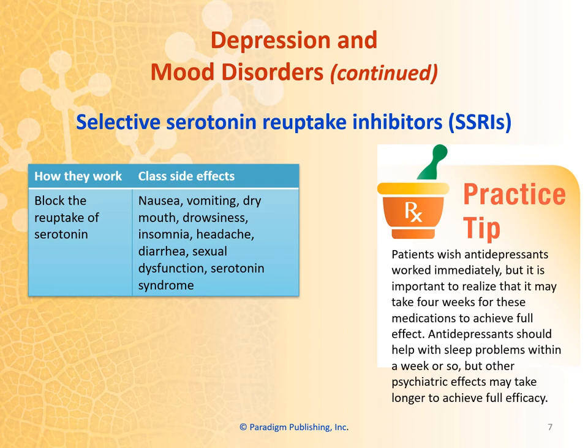There are different types of antidepressants. The first class we're going to talk about is selective serotonin reuptake inhibitors, or SSRIs. The way they work is they block the reuptake of serotonin. They do have some side effects including nausea, vomiting, dry mouth, drowsiness, insomnia, headache, diarrhea, sexual dysfunction, and serotonin syndrome.